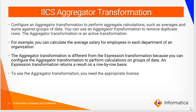Aggregator transformation is an active transformation. One can use aggregator transformation to perform aggregate calculations such as averages and sums against a group of data. For example, you can calculate the average salary for employees in each department of an organization.